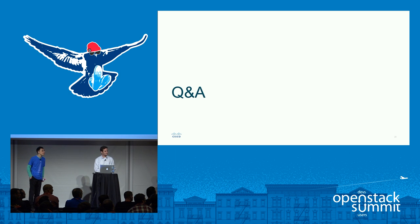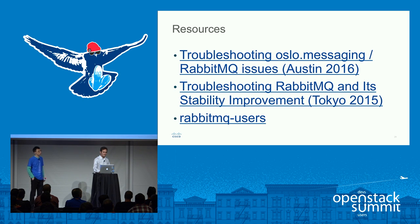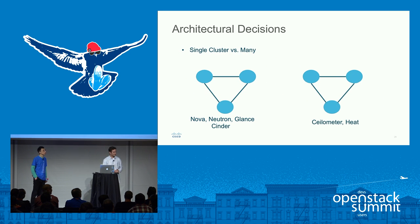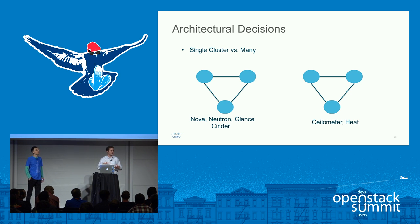Q: Is it really possible to have another RabbitMQ cluster for Ceilometer, or did you actually implement that — showing two different clusters, one for Nova, Glance, Neutron and the other for Ceilometer and Heat? A: We haven't implemented that, but we would — or we would even take separate services. The services are all independent of each other, so there should be no need for them to actually talk to each other on the same cluster.